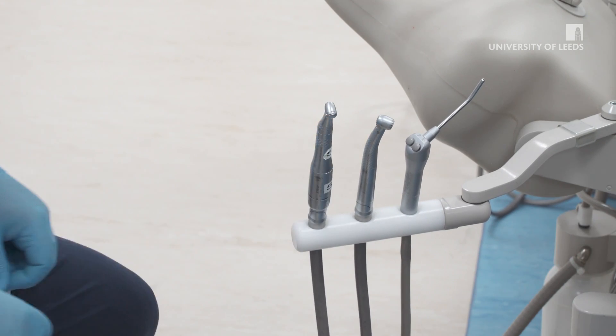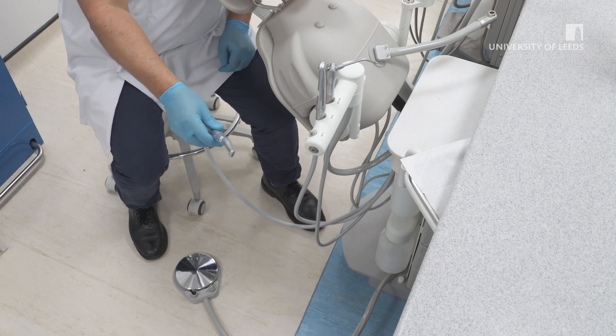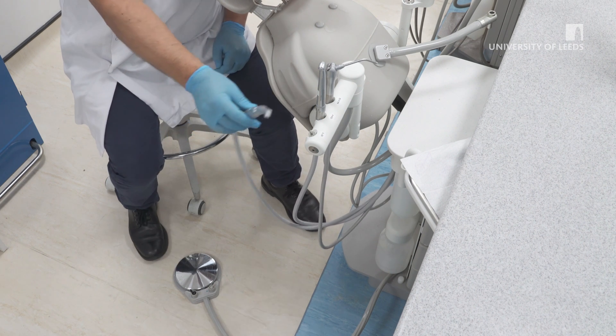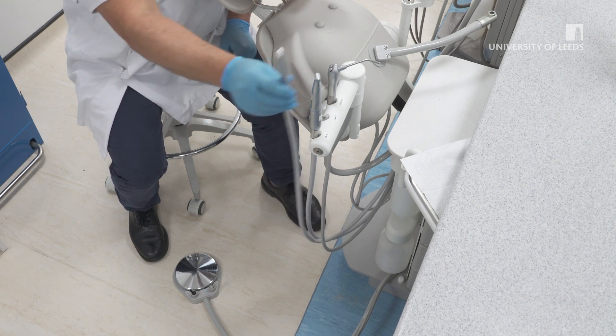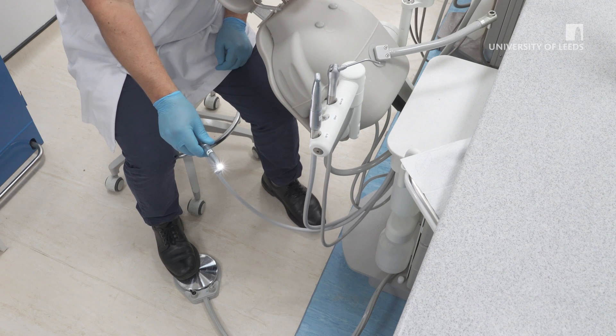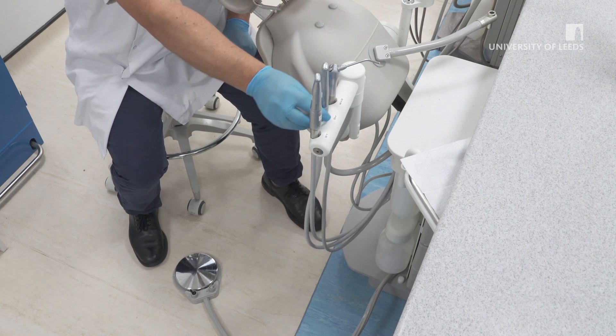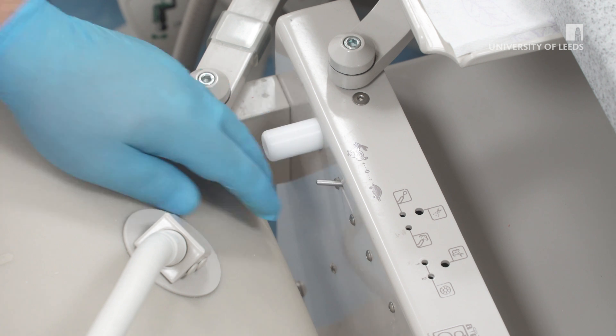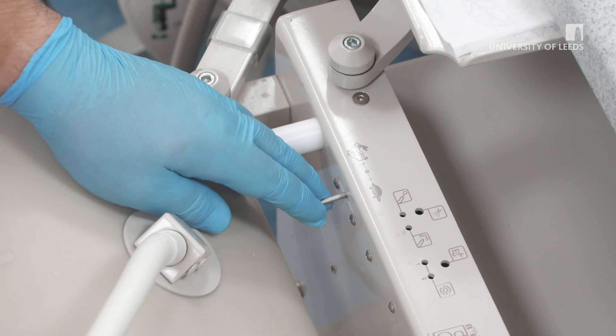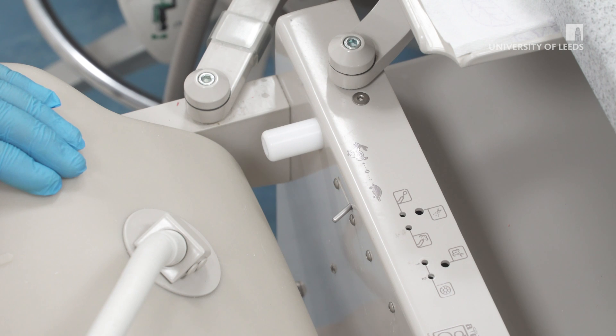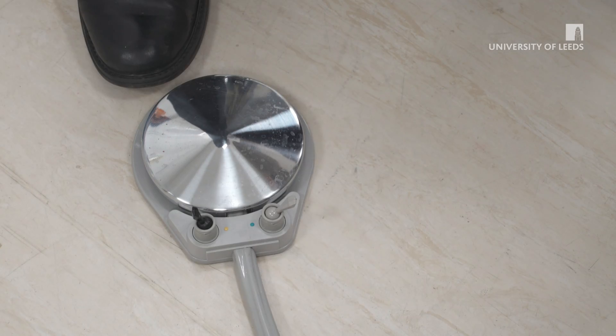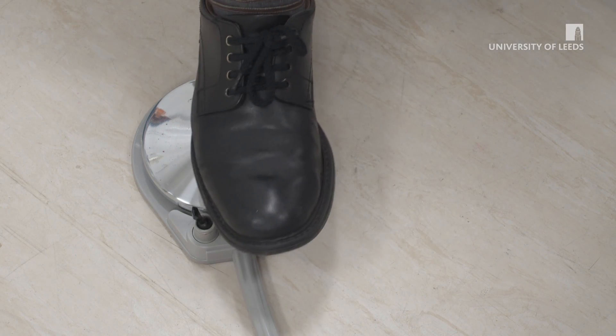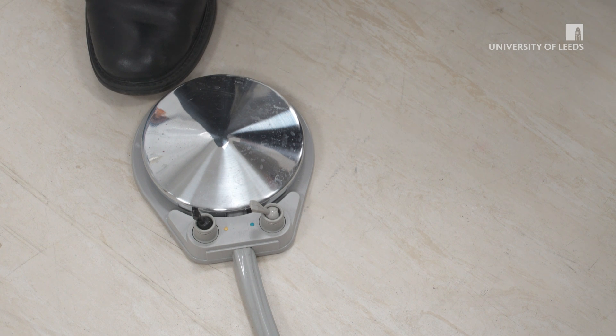To operate the slow speed handpiece on Type 1, take it out of the holder and press the foot pedal. The same technique is applied for the high speed handpiece. On Type 2, use the toggle switch to choose between the hare and tortoise. The hare for high speed and the tortoise for low speed, and press the foot pedal. If you want water for use with the high speed, move the toggle switch on the foot pedal to the blue dot.